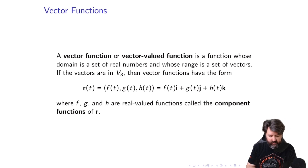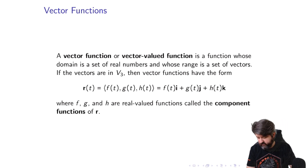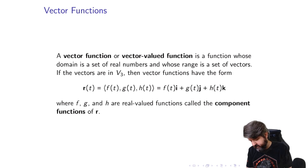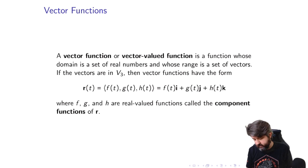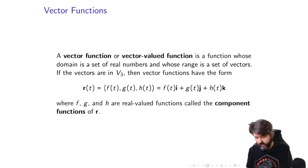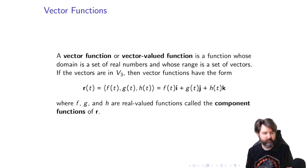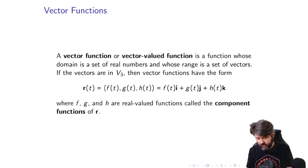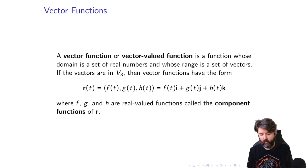Generally speaking, if you have a vector function, it's going to be some R of T, and it's going to be a vector where each component is a real-valued function F, G, and H. You could also write it in component notation. We call F, G, and H the component functions of R.